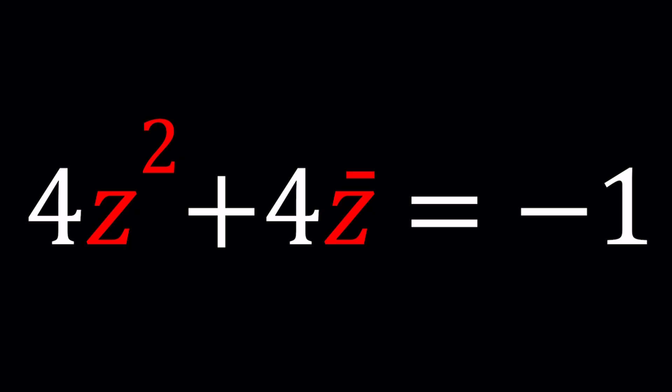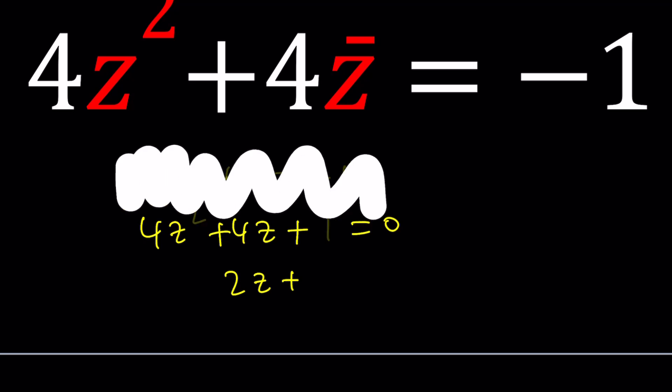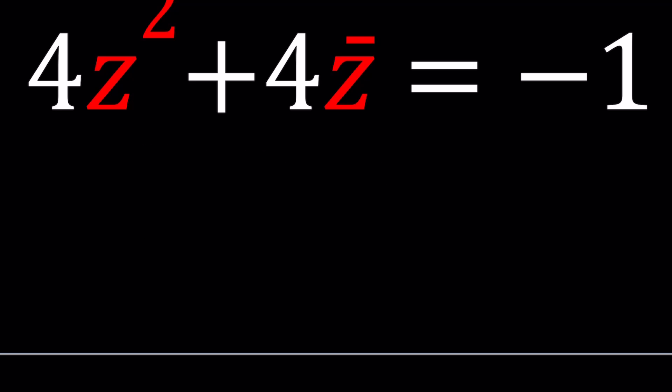Now, it would be nice to have something like 4z² + 4z = -1, because if you add 1 to both sides you're going to get a perfect square. So you would have 2z + 1 and you could solve easily, but that's not the case. Or is it? We're going to find out. Let's go ahead and take a look at this expression.